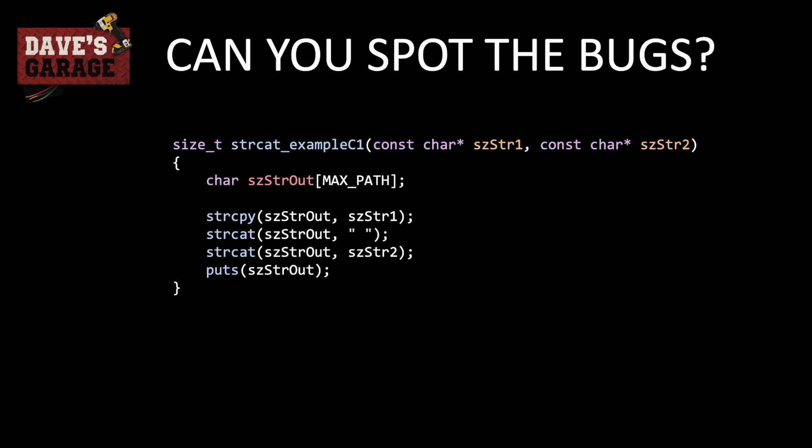The function accepts two strings, a const char string1 and a const char string2. It then declares a local output buffer of maxpath. Maxpath is set to 260 on Windows, so it's a fair size buffer. We then strcpy in our first string, strcat on a space, and strcat on our second string, then output it — which should output 'hello world' if we specify hello and world as the two incoming strings.